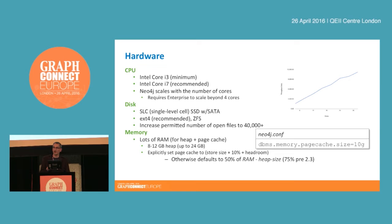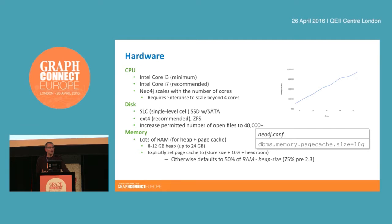We recommend explicitly setting the page cache size using the config parameter shown here. Set the page cache to about the size of your existing store on disk, plus 10%, plus some headroom for growth. If you're anticipating lots of writes, increase the size considerably. If you don't configure it, by default we'll try to consume about 50% of available RAM after deducting the heap size you've configured. You need to configure the heap size, the page cache, and allow additional space for the OS and any other apps or monitoring tools running on the machine.